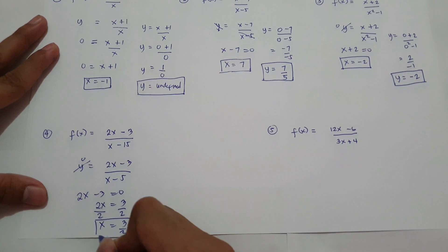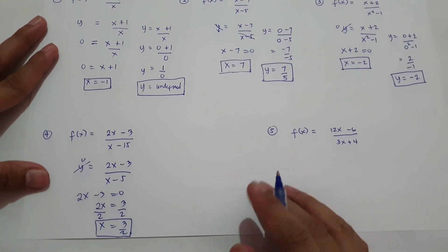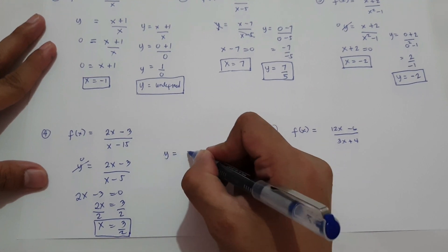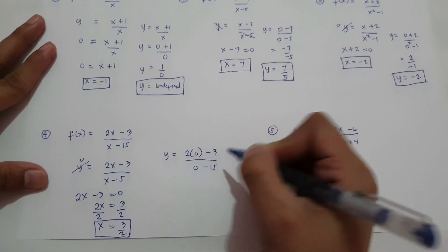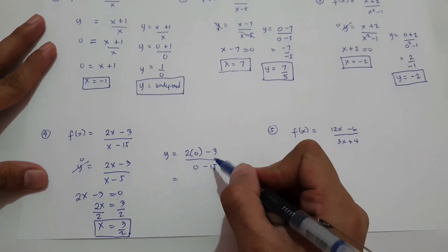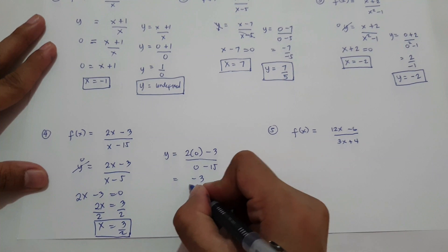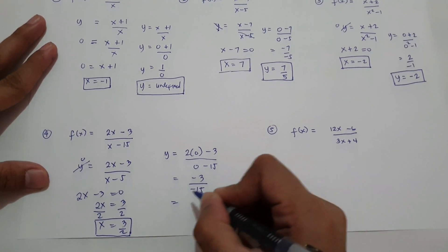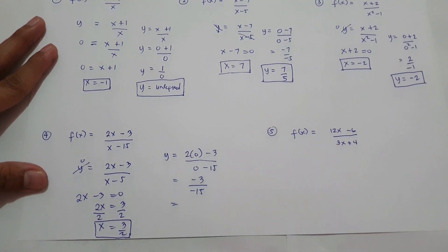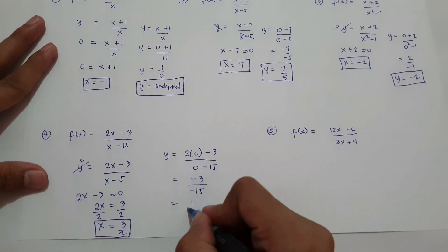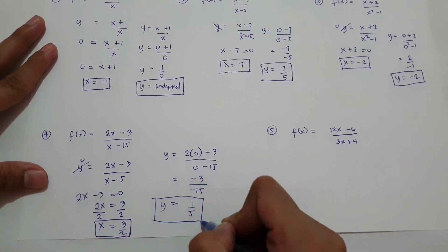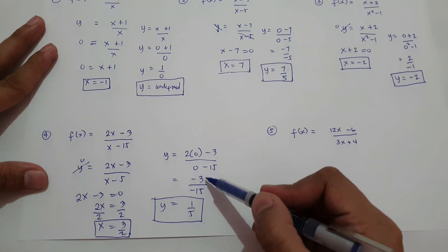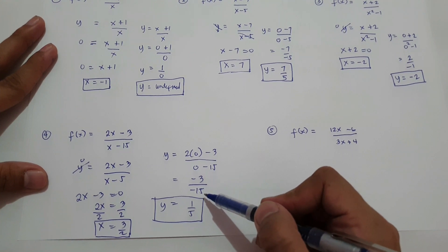For y intercept, substitute x = 0: y = (2(0) − 3) / (0 − 5) — wait, that is (0 − 3) / (0 − 5) = negative 3 over negative 5. Negative divided by negative is positive. 3 over 15 can be written as 1 over 5 because the greatest common factor of 3 and 15 is 3. So our y intercept is positive 1 over 5.